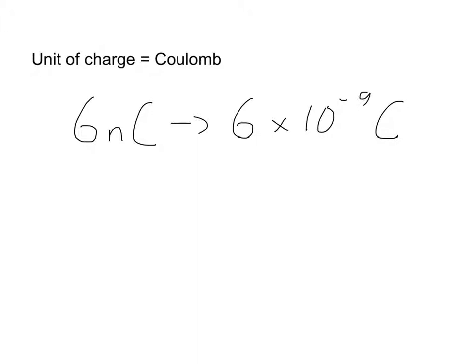Additionally, the value of K that we saw in the last slide is 8.99 times 10 to the 9th Newtons times meters squared divided by Coulombs squared. Much like the large G in the universal law of gravitation, this value is the same everywhere that we operate.